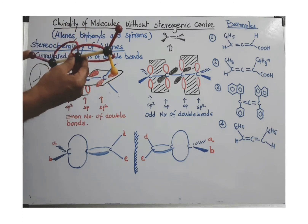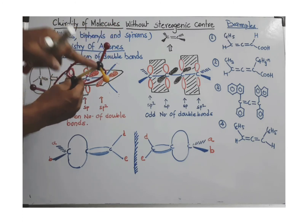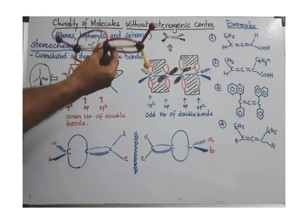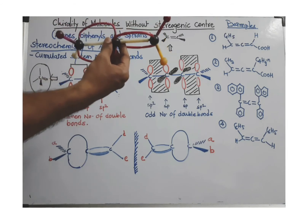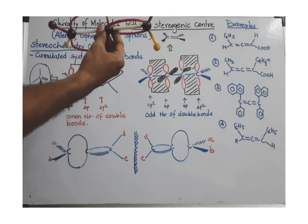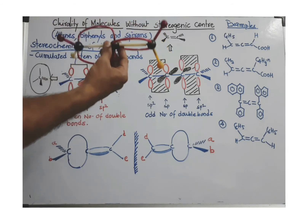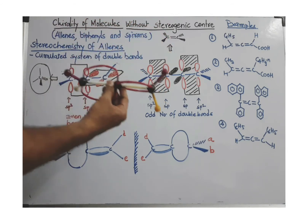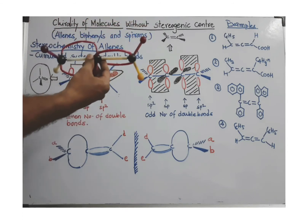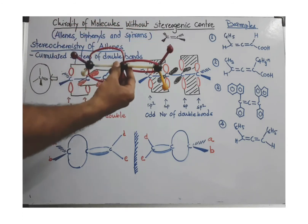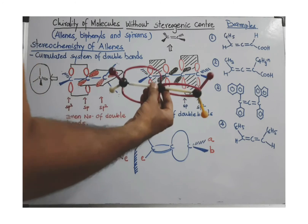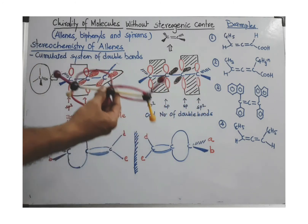Because of this tetrahedral-like arrangement, if different groups are attached at the terminal carbons, the molecule can form a non-superimposable mirror image. This molecule is therefore a chiral molecule and can show optical activity.